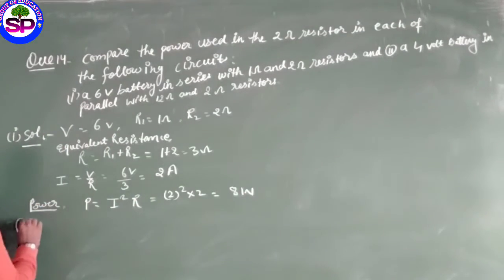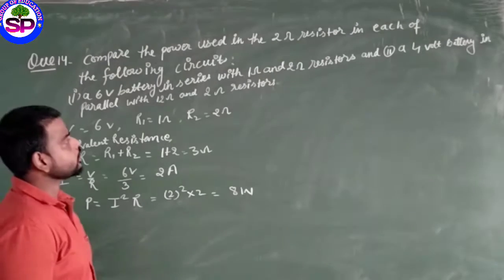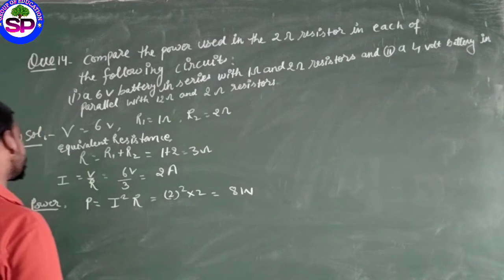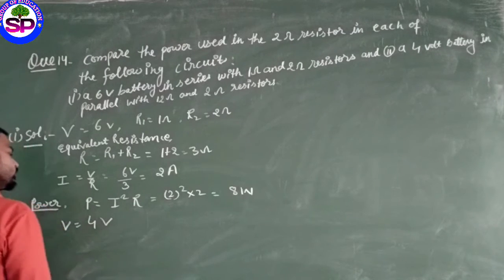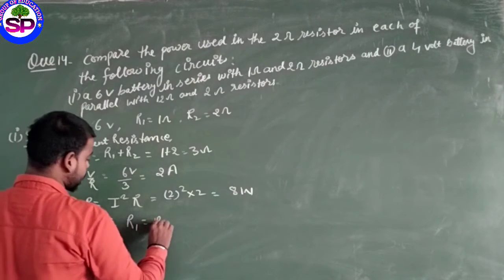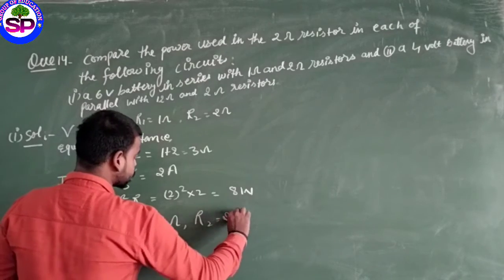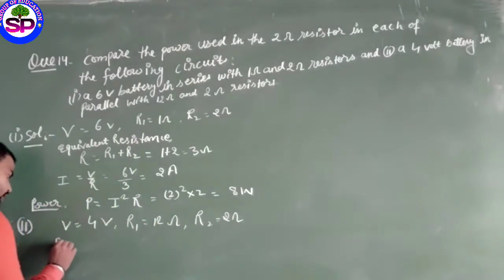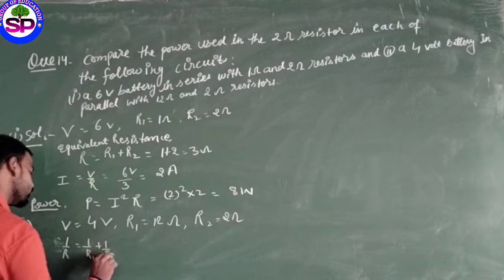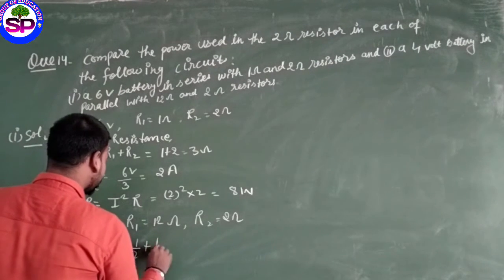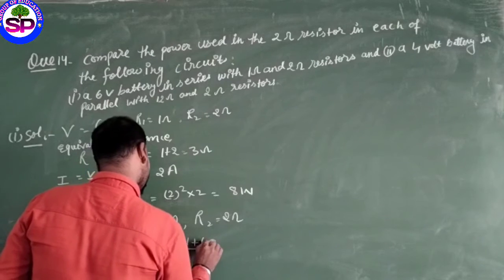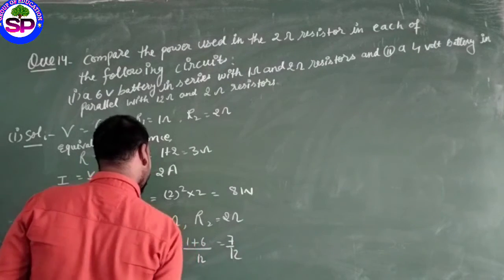In the second case, 4 volt battery in parallel. V is 4 volt, R1 is 12 ohm, and R2 is 2 ohm. First find equivalent resistance: 1 upon R equals 1 upon R1 plus 1 upon R2, equals 1 upon 12 plus 1 upon 2. This gives 1 plus 6 equals 7 upon 12.